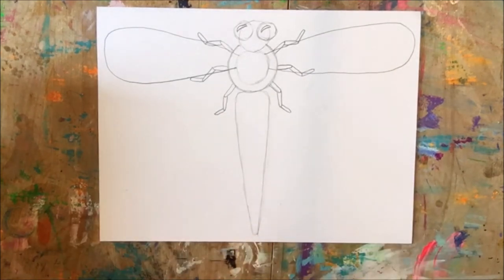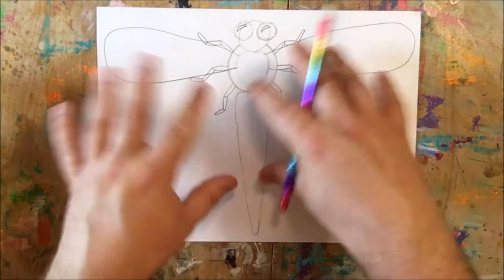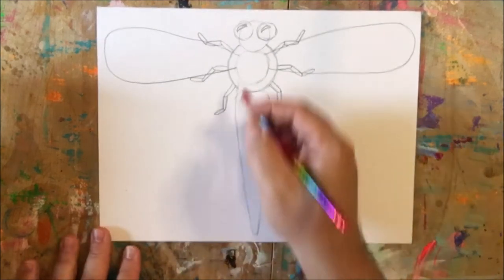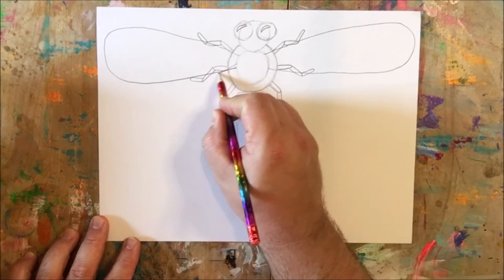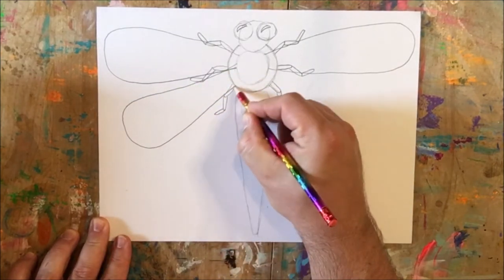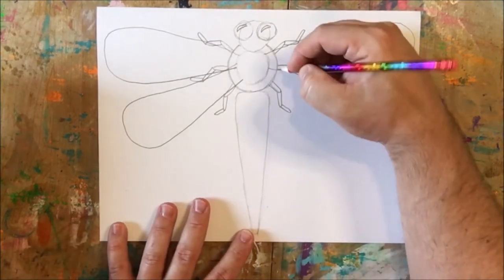I need to make another set of wings here on my dragonfly. Dragonflies have four wings. So I'm going to draw another set right here. Another U down here, just like that. And I'm going to make another U.